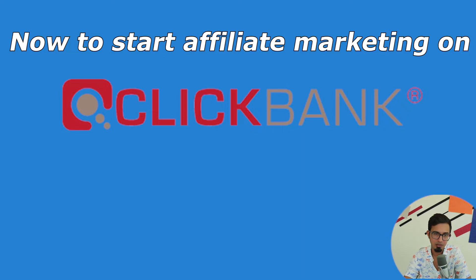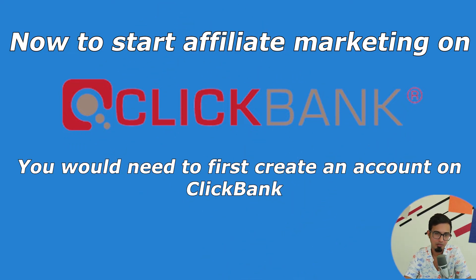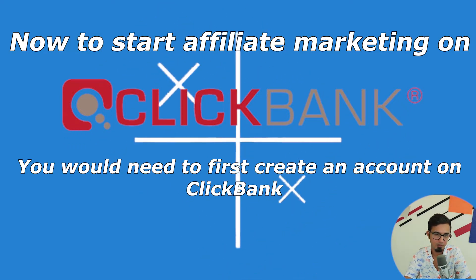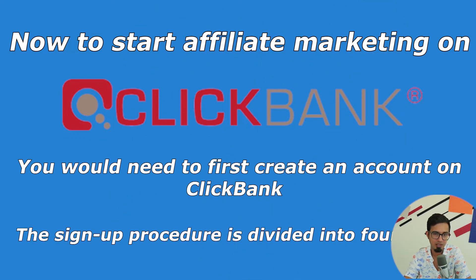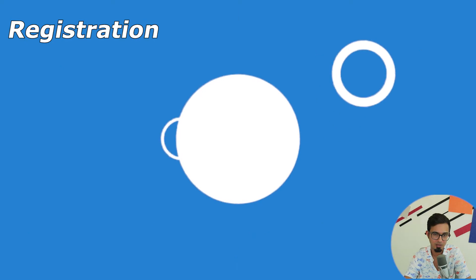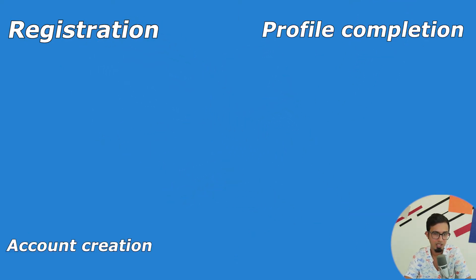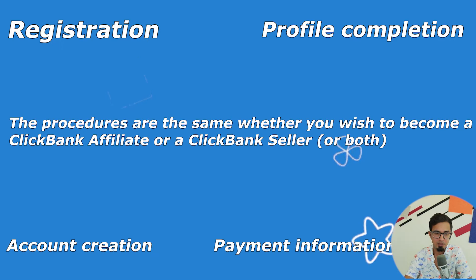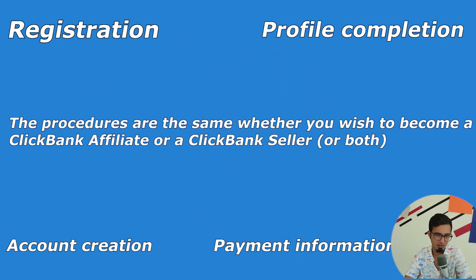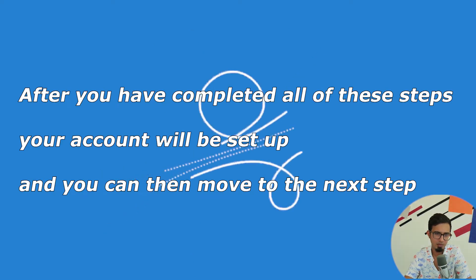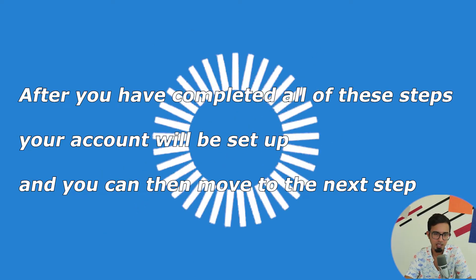To start affiliate marketing on ClickBank, you need to first create an account. The sign-up process is divided into four stages: registration, profile completion, account creation, and payment information update. The procedures are the same whether you wish to be a ClickBank affiliate, a ClickBank seller or vendor, or both.